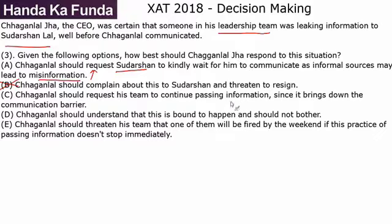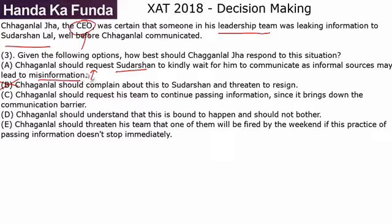Option C: Chagan Lal should request his team to continue passing information since it brings down the communication barrier — essentially allowing all employees to directly report to Sudarshan. That's not appropriate here. The reason Chagan Lal was appointed as CEO is because Sudarshan and family wanted to step away from day-to-day operations. Chagan Lal should request his team to communicate directly to him, not to Sudarshan — that defeats the purpose of hiring a CEO. Option C is a bad option.